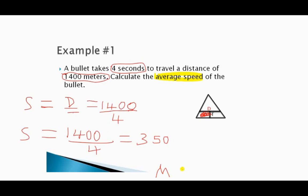Therefore the average speed at which the bullet travels is three hundred and fifty meters per second. This is how we calculate or find the average speed of a bullet.